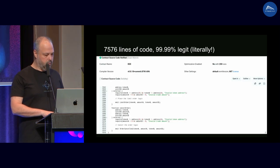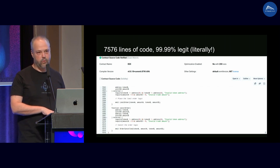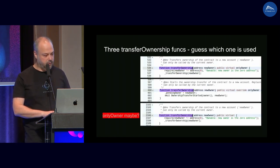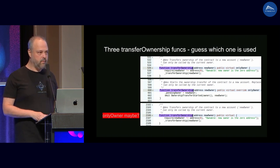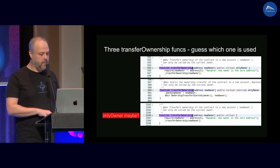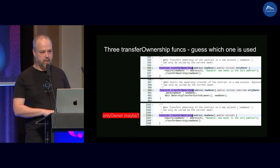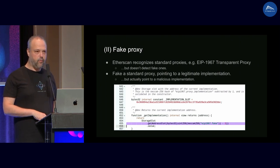We demonstrated this by deploying a DEX which is more than 7,000 lines of code — most of it unused, just uploaded as part of verification. Inside there is one small bug, well hidden. The contract is ownable and has a transferOwnership function. There are multiple implementations that inherit from Ownable. The first two versions are fine, but the third implementation is almost fine except it's missing the onlyOwner modifier, which means that basically anyone can take over this contract.